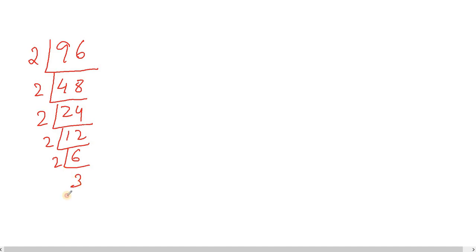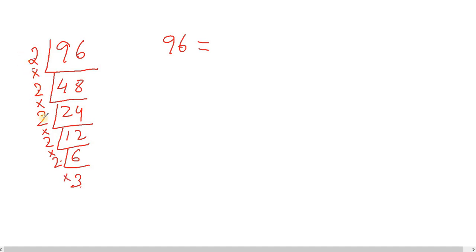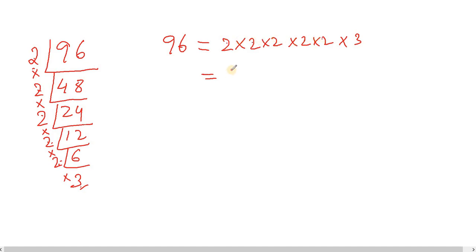So we divide: 96 ÷ 2 = 48, 48 ÷ 2 = 24, 24 ÷ 2 = 12, 12 ÷ 2 = 6, 6 ÷ 2 = 3. So 96 equals 2 × 2 × 2 × 2 × 2 × 3, which is 2 to the power 5 into 3. These are the prime factors of 96.